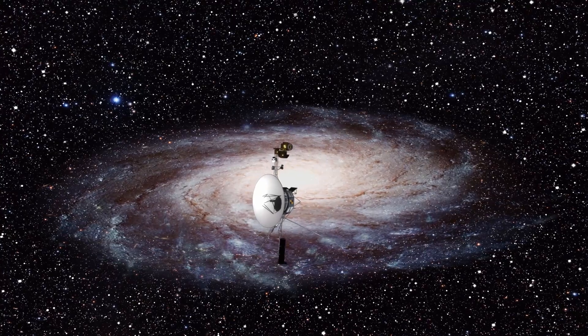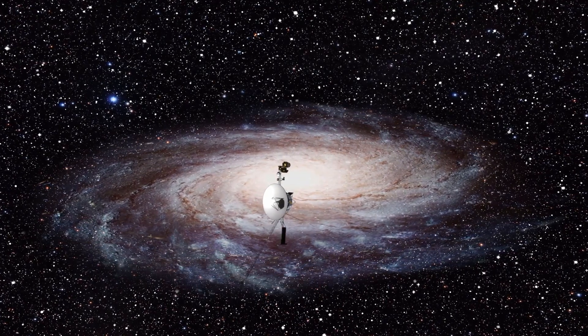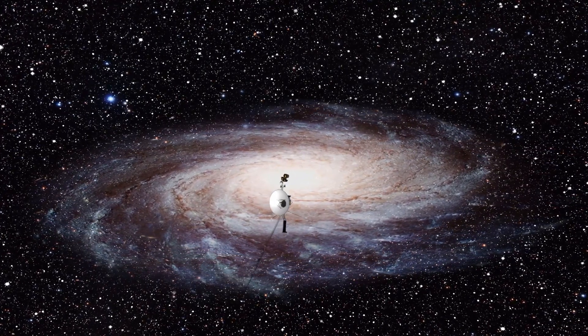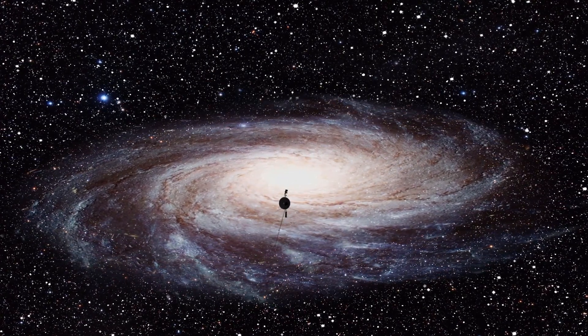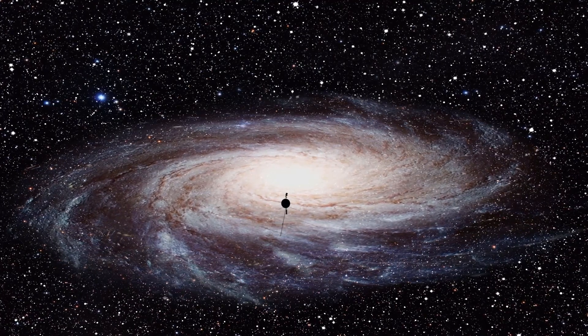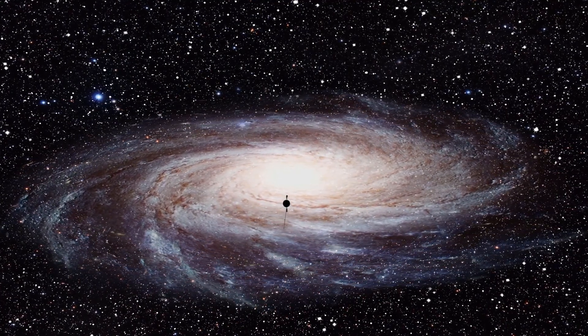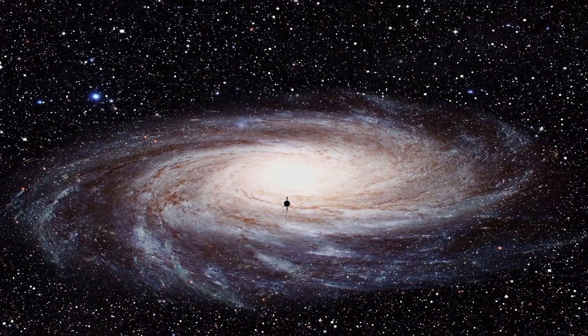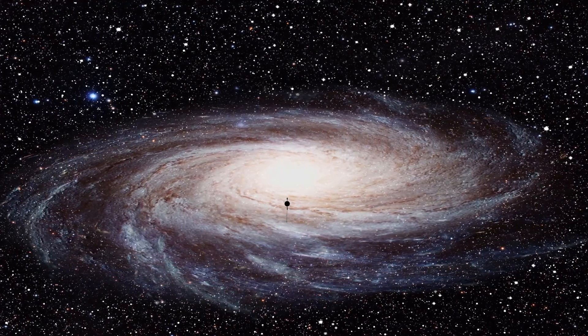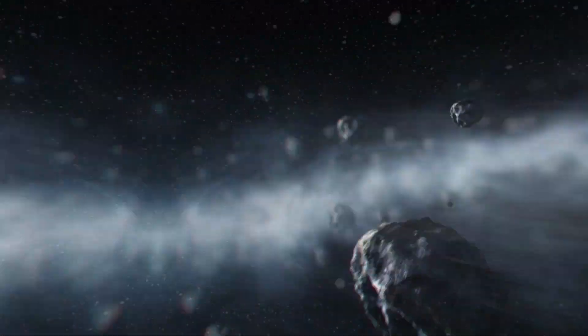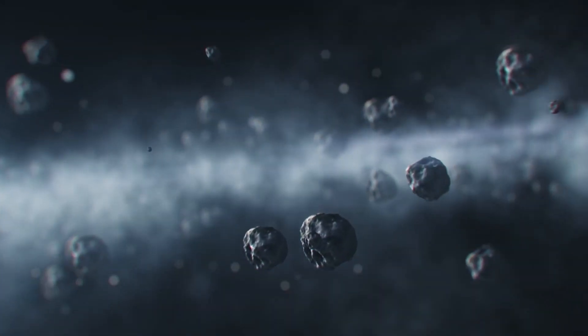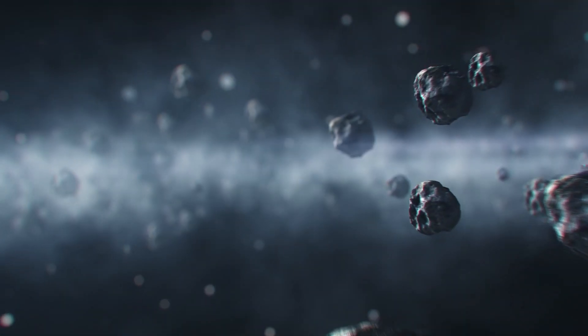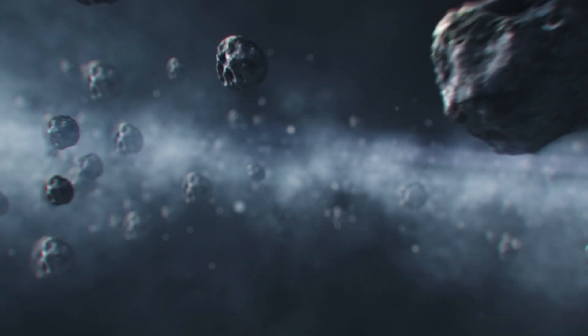The fact that the Voyagers have lasted so long has proven invaluable to the world of astronomy. Without these two probes, we might never have had a chance to study the unknown that lies beyond our solar system for a very long time. Our Sun is surrounded by an enormous cosmic bubble called the Heliosphere. This bubble is filled with the plasma that comes from the Sun as solar wind. The edge of the Heliosphere is called the Heliopause, where the solar wind collides with the surrounding interstellar medium.